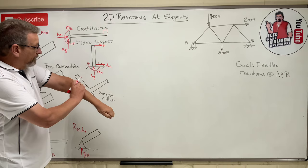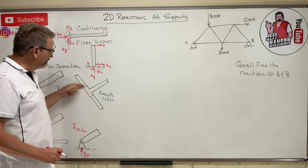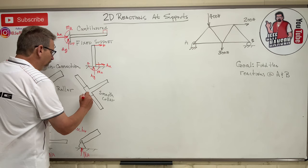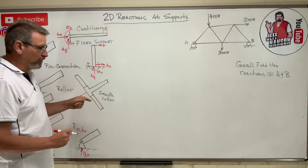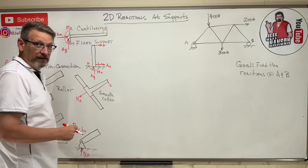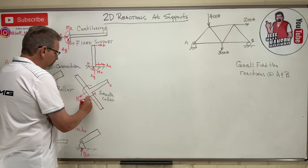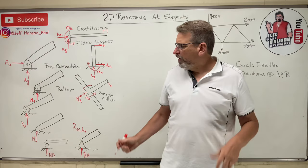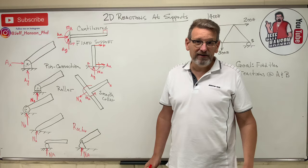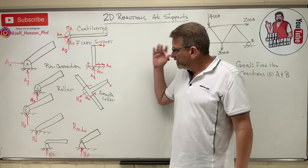One more support type: the smooth collar that slides up and down a rod. Smooth means no friction, so it can move up and down freely. However, it cannot move perpendicular to the rod — there's a normal force there. And if you pull down on it, will it spin? No — so there is also a reaction moment. Again, just ask yourself: can I move it in x, in y, can I spin it? If no, put a reaction force there. This is common sense, not memorization.